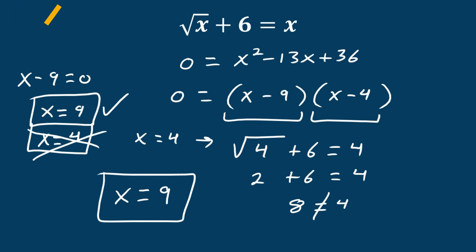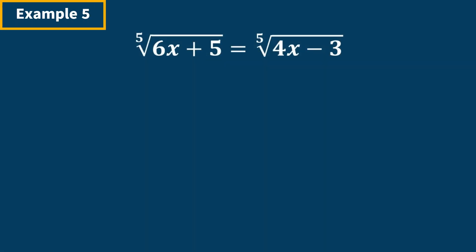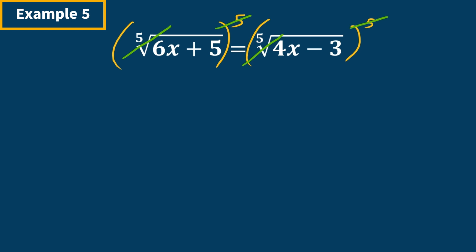Example five: we have radicals on both sides, and the index number for both radicals is 5. So we raise both sides to the fifth power. The radical cancels on both sides, and what we're left with is 6x plus 5 equals 4x minus 3.